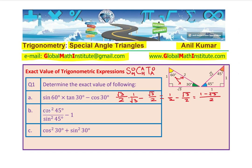The second one is very interesting: cos squared 45 over sin squared 45 minus 1. For 45 degrees, sine and cosine have exactly the same value — both opposite and adjacent sides are 1. Cos45 is 1 over square root 2, so cos squared 45 is 1 over 2. Sine squared 45 is also 1 over 2. So we get 1 over 2 divided by 1 over 2 minus 1, which is 1 minus 1, and that is 0.